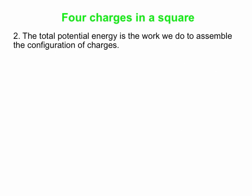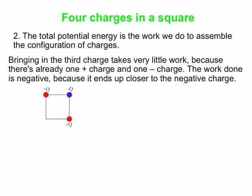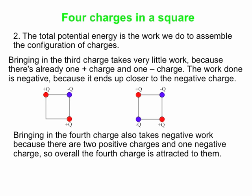For the third charge — the second positive — there's repulsion from the other positive and attraction to the negative. Overall it takes a little negative work because it ends up closer to the negative charge, which wins out. For the fourth charge, it sees two positives and only one negative, so there's a big attraction overall; we have to hold it back on the way in, again doing negative work.